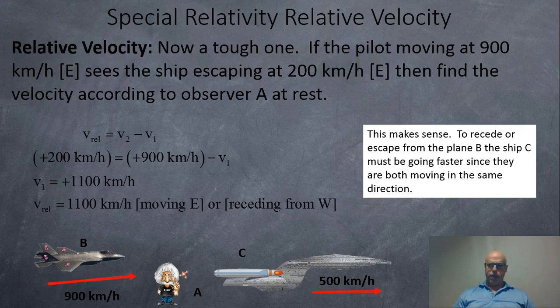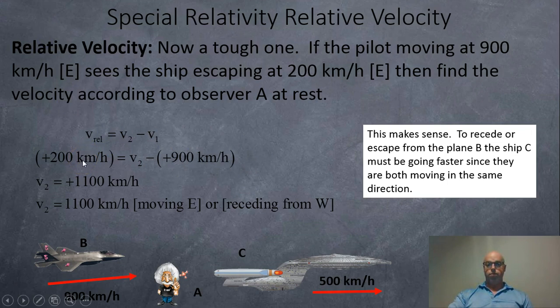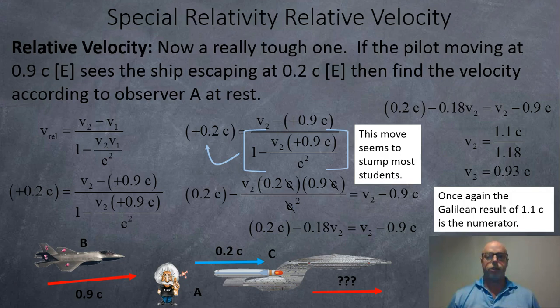Now a real tough one. Reverse question. If a pilot moves at 900 km per hour and sees a ship escaping at 200, find the velocity according to observer A at rest. Here the relative velocity is given instead, and we have to find the velocity of the other object. We've got 200 equals 900 subtract V1. So V1, when we rearrange it, is going to be equal to 1,100 km per hour. So this ship here is escaping at 1,100 km per hour. I just noticed a typo, so I fixed it. The relative velocity 200, we're trying to find object C, subtract the velocity of our main observer, and it's going to be 1,100.